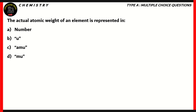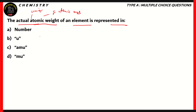Now let's look at a question of chemistry. The actual atomic weight of an element is represented in which unit — number, u, amu, or mu? When we're talking about actual atomic weight, we're not talking about the gram atomic mass, because the gram atomic mass deals with the mass of a mole of atoms. The actual atomic weight has a different unit, and this is what we need to find out. Number usually refers to atomic number and refers to the number of protons in an atom, so therefore option a is incorrect.